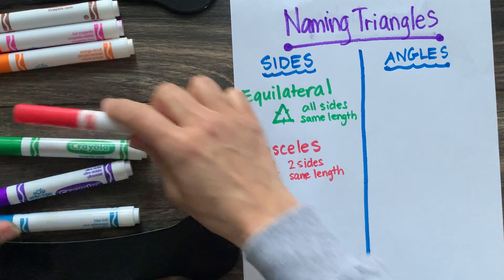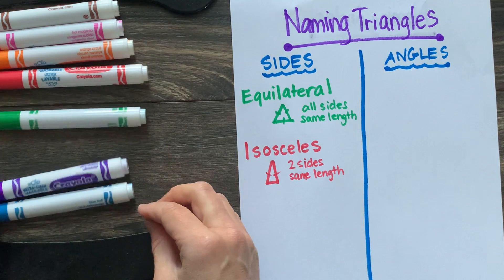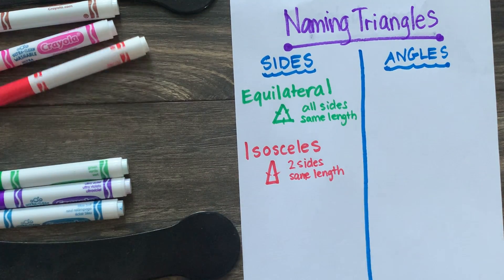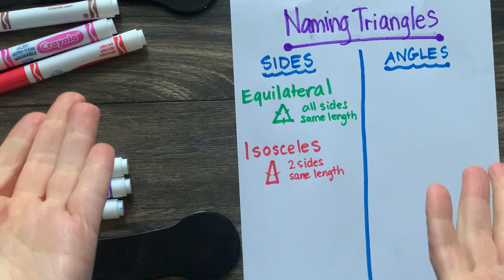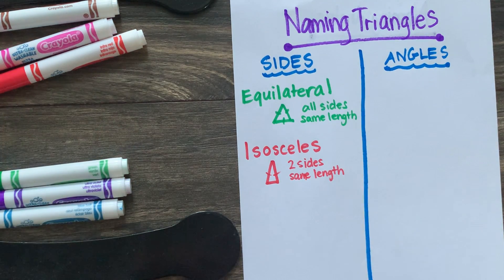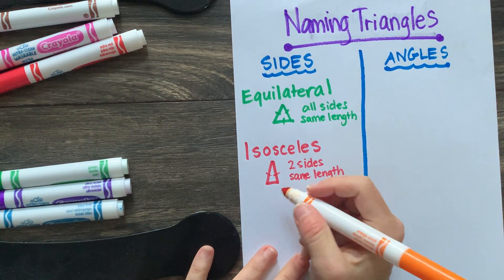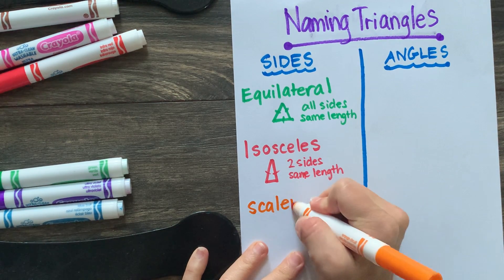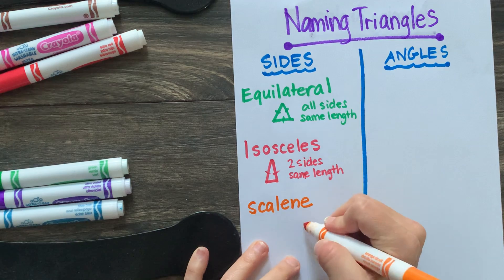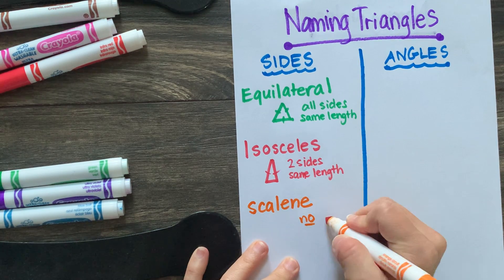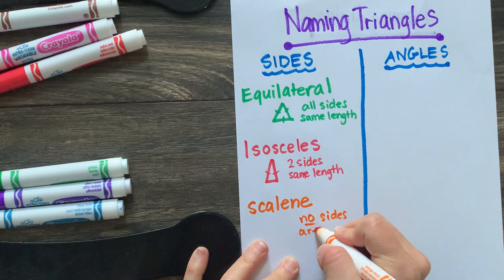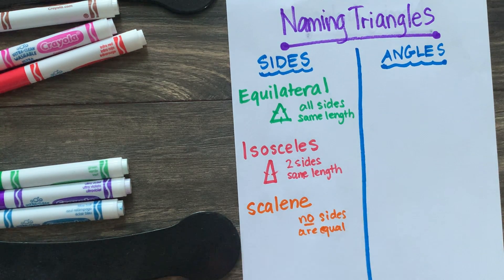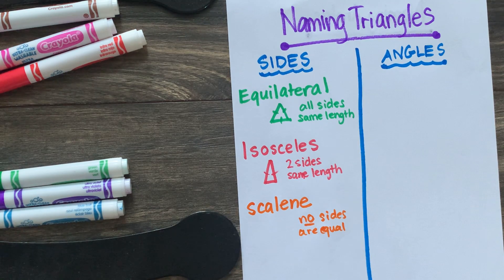So isosceles has two sides. Equilateral has all sides. And now while I'm getting up my last marker here, go ahead and tell me, which should I place? Let's go with orange. What should we say? This one has no sides the same length. It's kind of awkward and weird and off. And this word is called scalene.